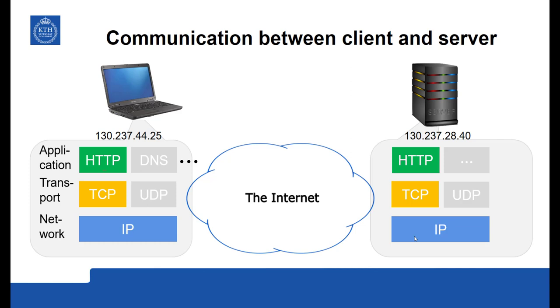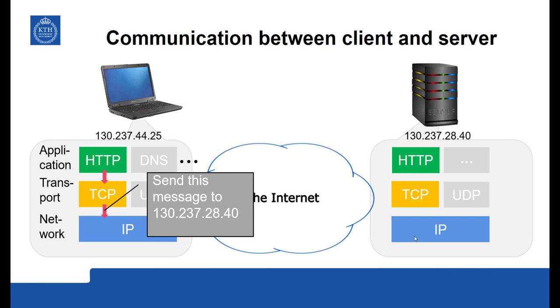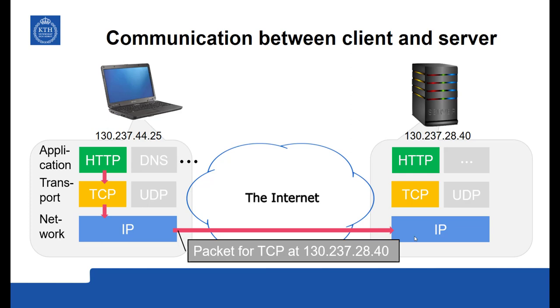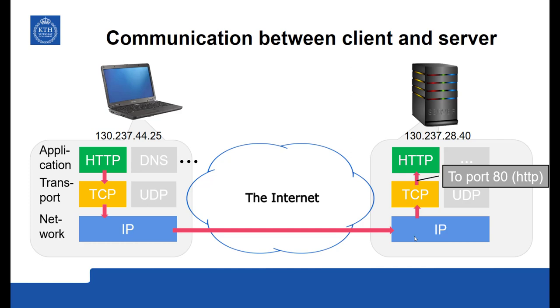HTTP on the client side would like to communicate with the HTTP program on the server side. It indicates this with a port address, which is 80 for HTTP. TCP will send this message and ask the IP layer to forward it to the addressed computer. The internet protocol ensures connectivity between all computers across the internet. It sends packets destined for the server with an indication that when received the IP packet should be forwarded up to TCP, and TCP in turn sees from the port address that the contents are destined for HTTP.